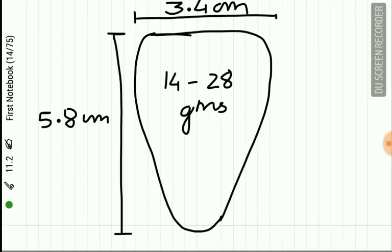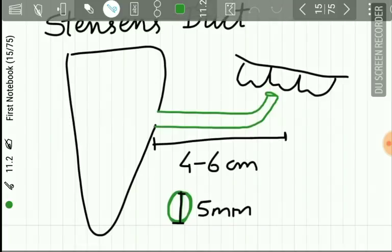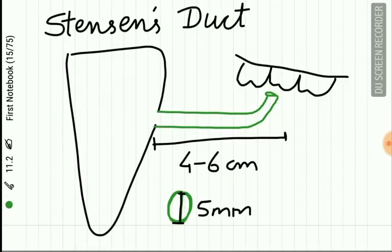The dimensions of the parotid gland are 5.8 cm in length and 3.4 cm in width. Its weight ranges from 14 to 28 grams. The excretory duct of the parotid gland is called Stenson's duct, which is 4 to 6 cm in length and 5 mm in diameter.